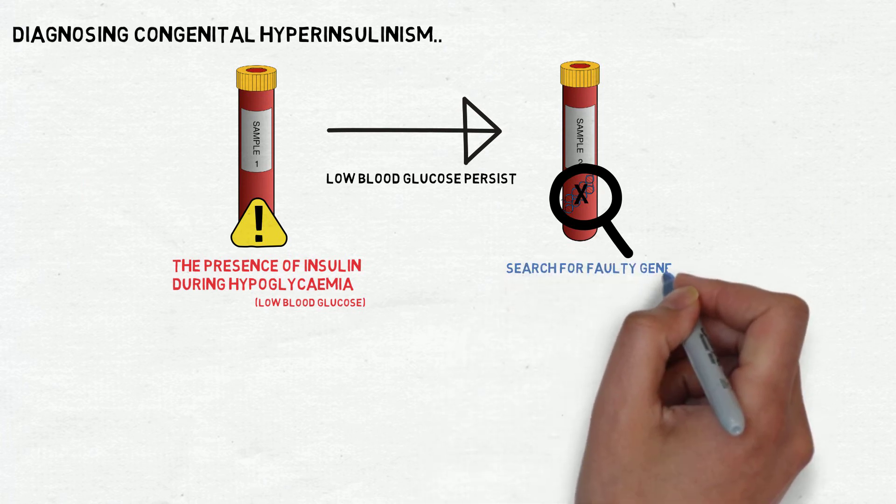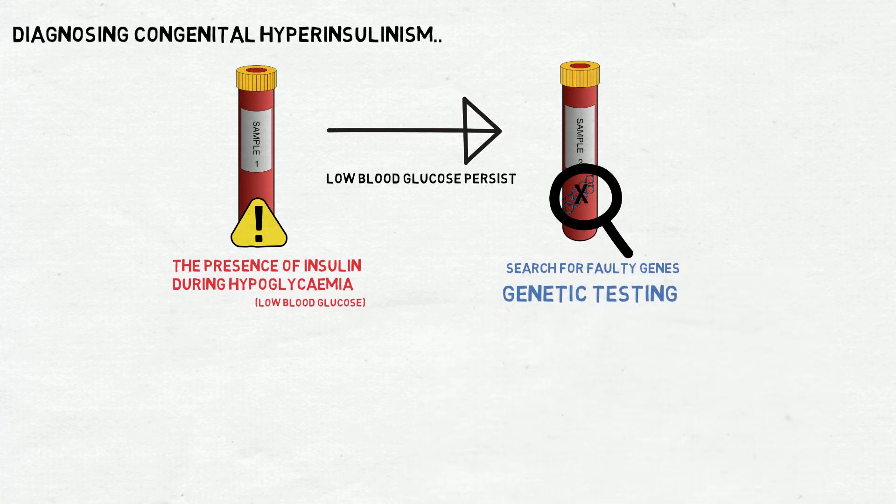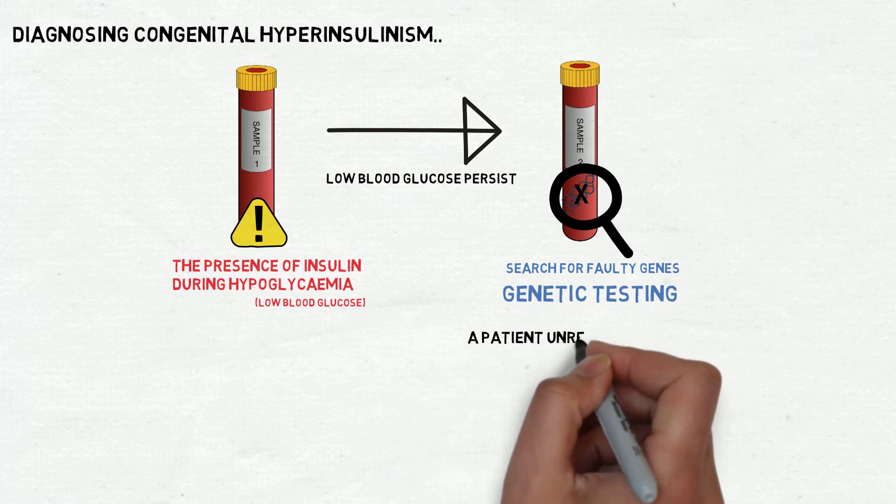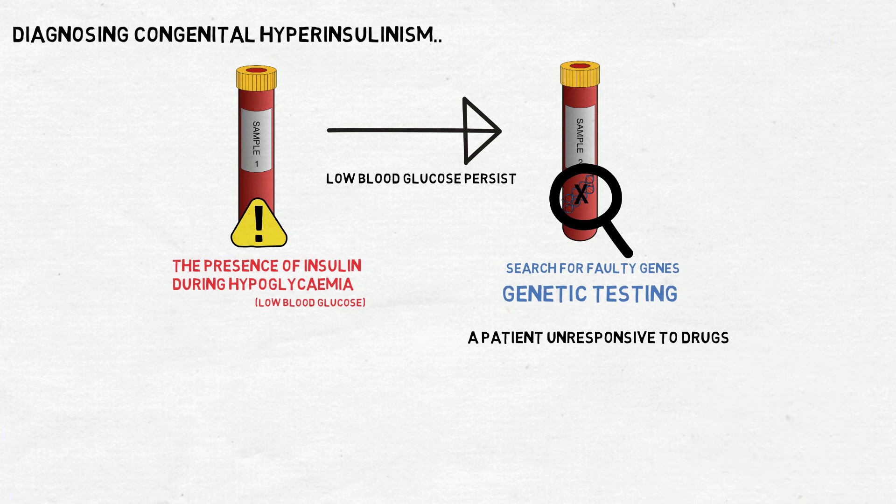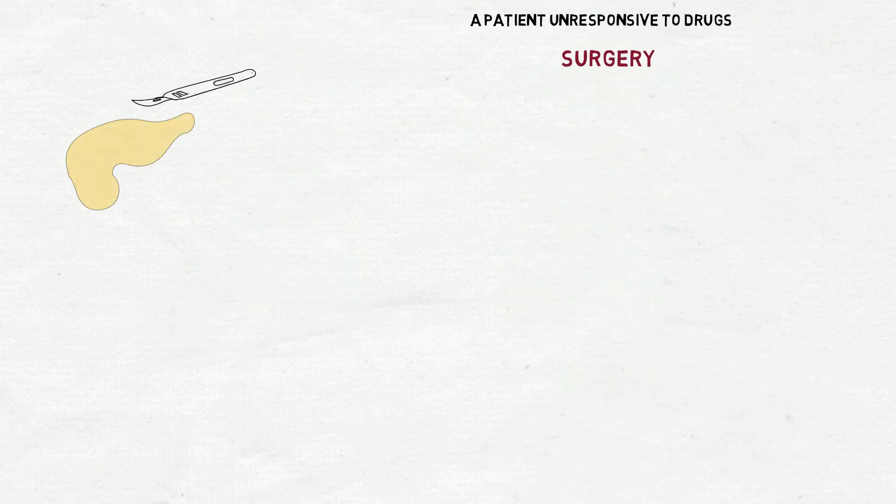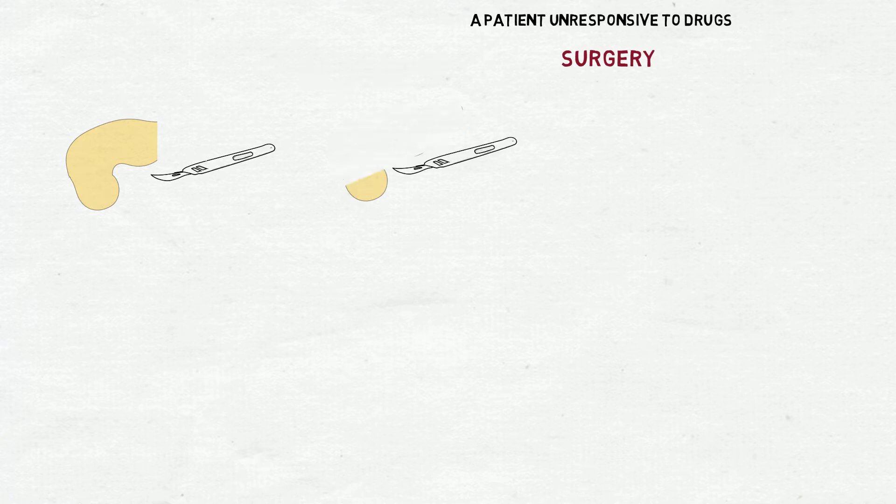The search for faulty genes is called genetic testing and plays an important role in determining whether or not a patient unresponsive to drugs should undergo surgery to remove either a small part of or nearly all of their pancreas.